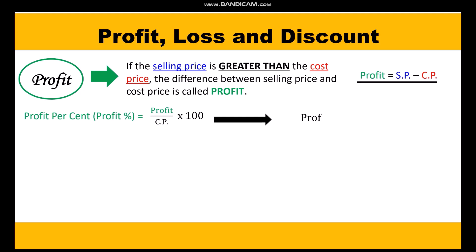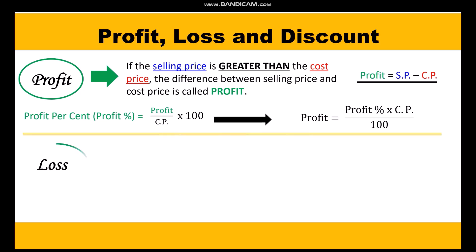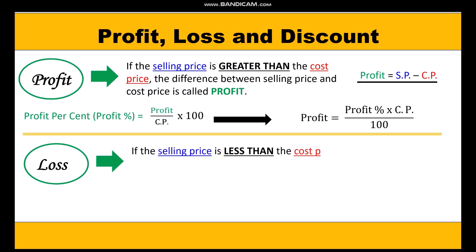If we want to find profit, we cross multiply and get: profit = (profit percent × cost price) / 100. Now let us talk about loss. If the selling price of an article is less than the cost price, the difference between the cost price and selling price is called loss.